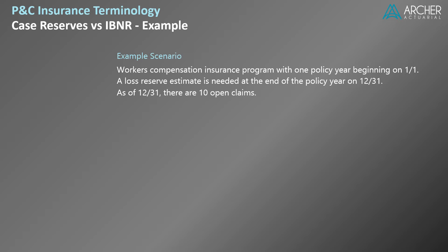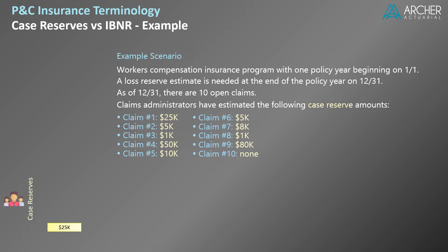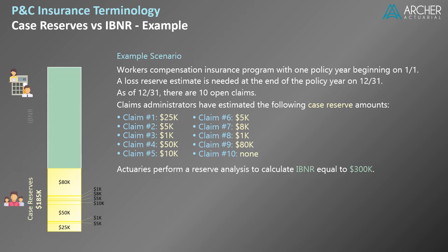As of 12/31, we discovered that there are 10 open claims. Claims administrators have estimated case reserves for the 10 open claims. The chart on the left displays the case reserves in yellow. The sum of case reserves for all open claims equals $185,000. Actuaries use this information and more to calculate an estimate of IBNR equal to $300,000. Note, we are not going to discuss the process of calculating IBNR here — the purpose is to understand why it is necessary.